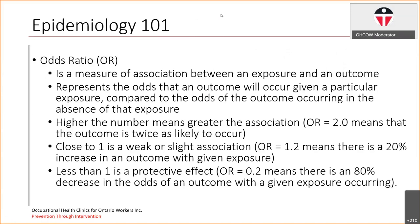Before we get into truly understanding Dupuytren's Contracture, we need to do a quick rehash of epidemiology 101. For many of the studies we're going to be talking about, they use a measurement called the odds ratio. The odds ratio is a measure of the association between an exposure and an outcome. It represents the odds that an outcome will occur with a given particular exposure compared to the odds of the outcome occurring with the absence of that exposure. The higher the number, the greater the association. An odds ratio of two means the outcome is twice as likely to occur.